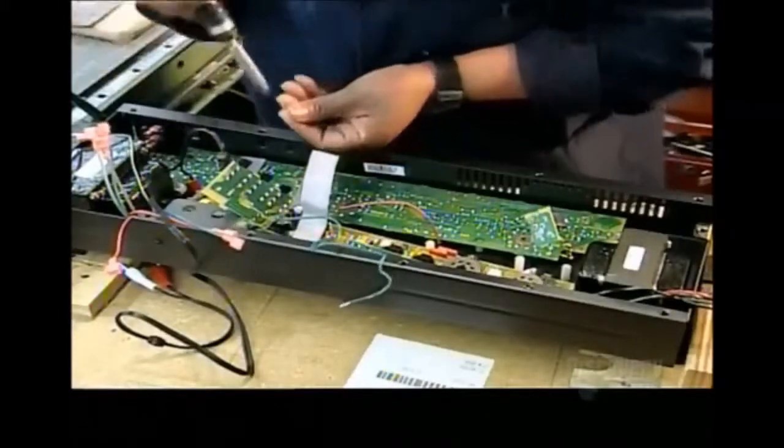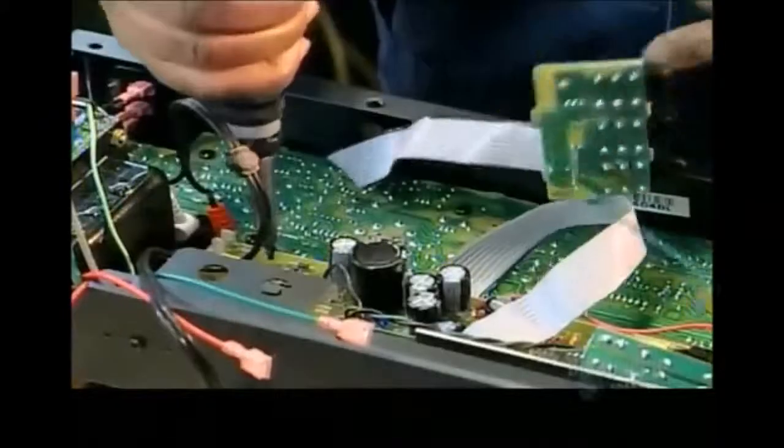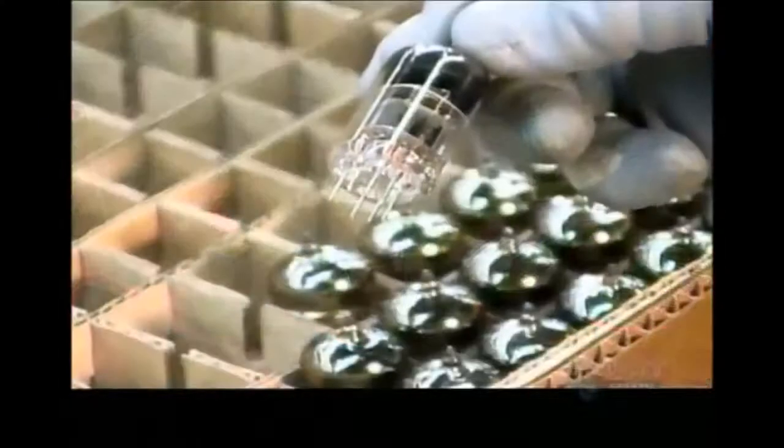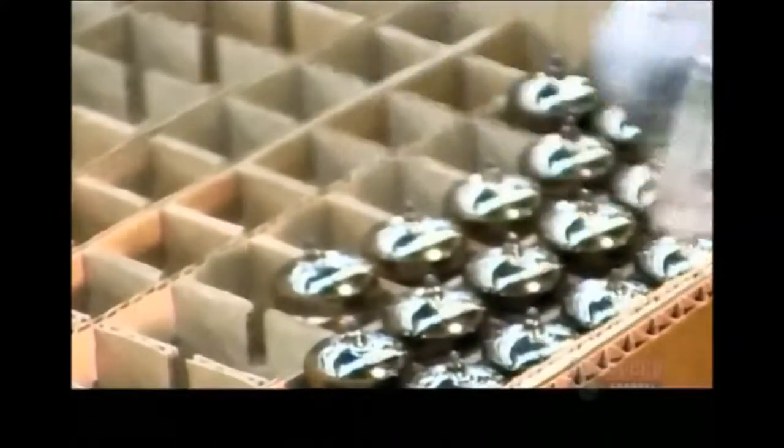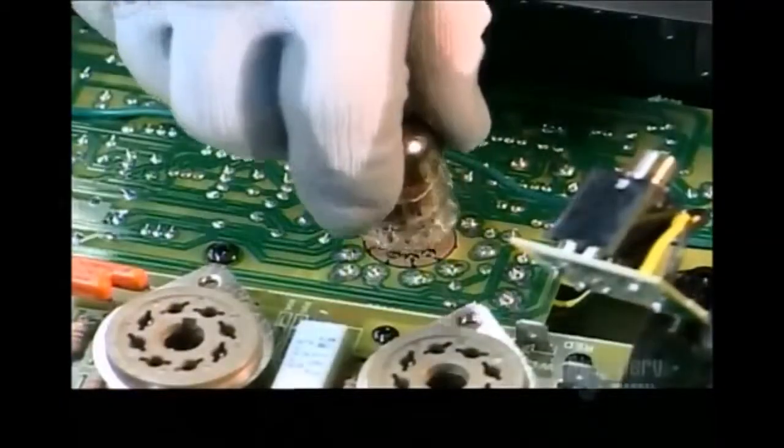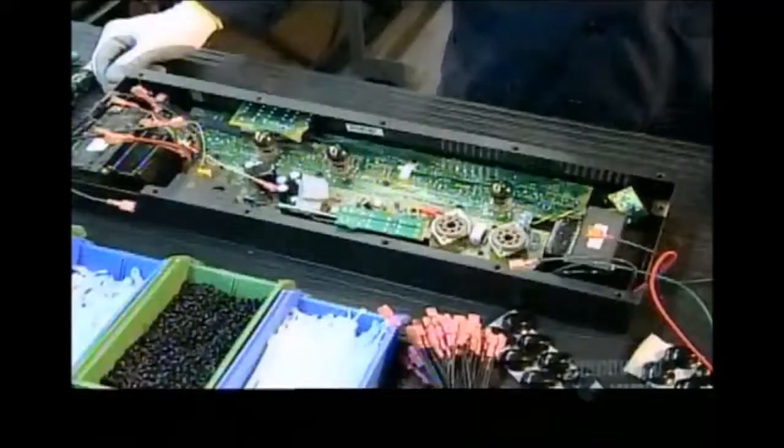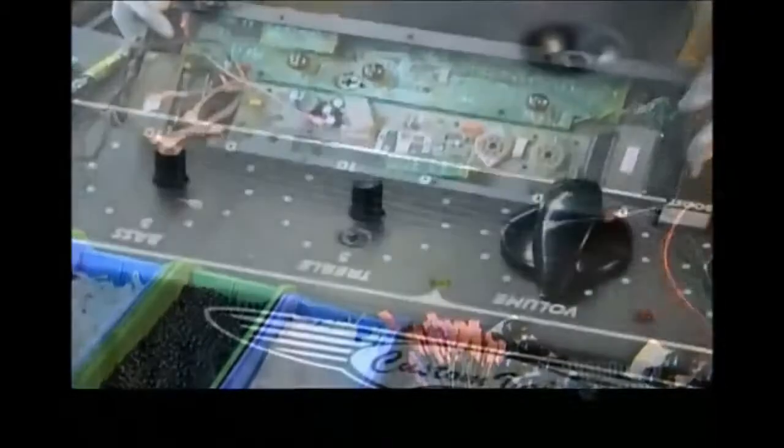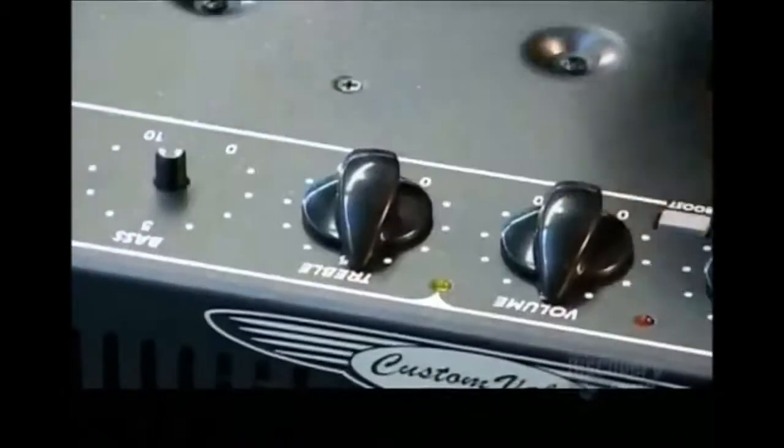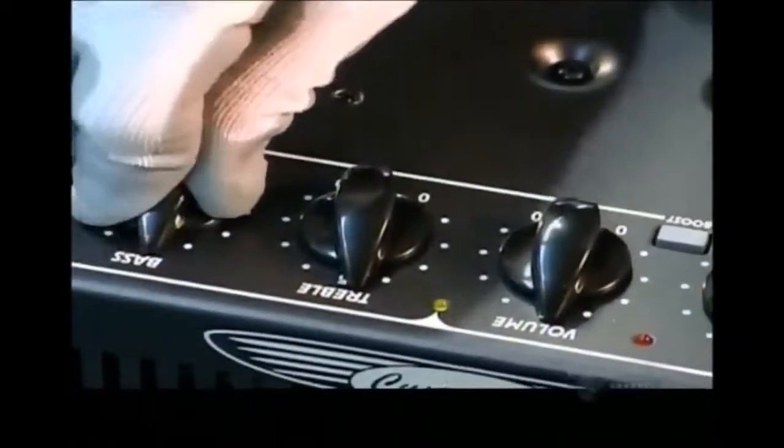They begin the final assembly. First, they screw the circuit board into the chassis. Then they plug the preamp tube into the appropriate socket on the board. This tube boosts the electrical signal coming from the guitar and feeds it to the output tubes, which up the voltage level, making the signal stronger and louder.